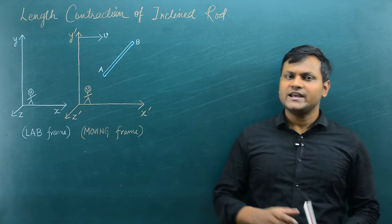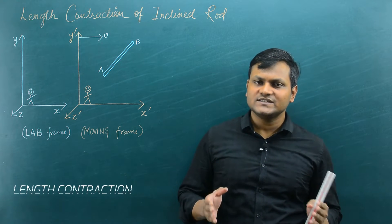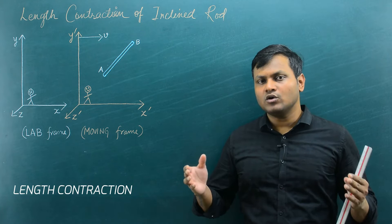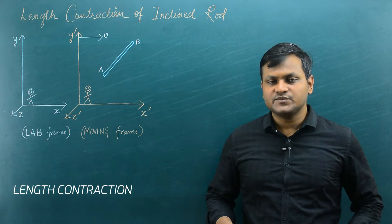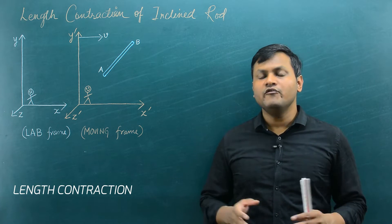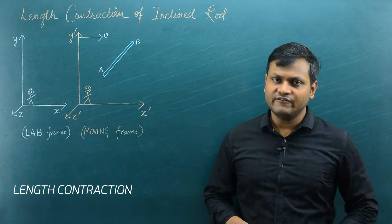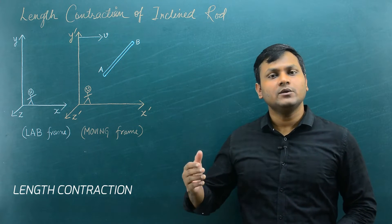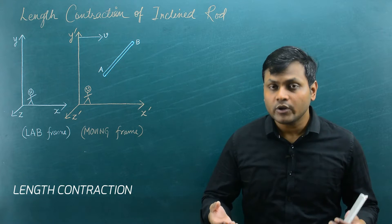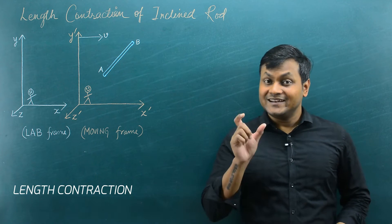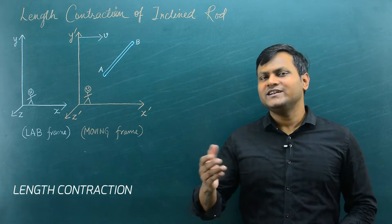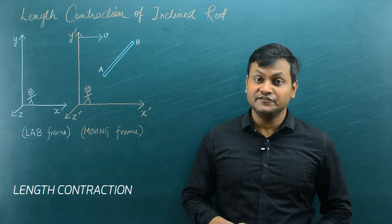In one of my previous videos, I talked about the concept of length contraction itself. Length contraction is a consequence of the postulates of special theory of relativity. Whenever objects are moving at very high velocities — velocities comparable to the speed of light — then with respect to an observer at rest, their lengths appear to be contracted along the direction of relative motion.